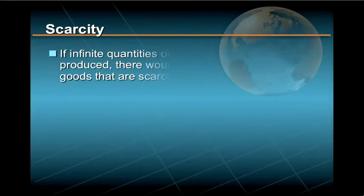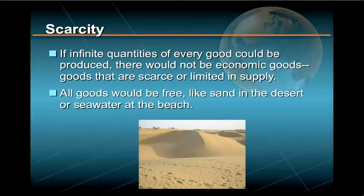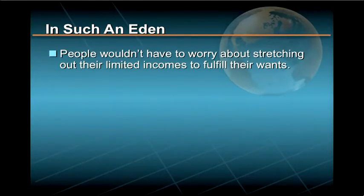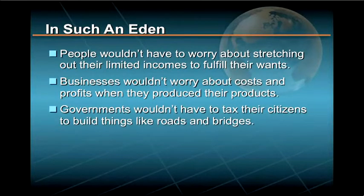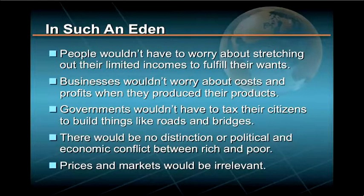Take scarcity first. If infinite quantities of every good could be produced, there would not be economic goods – that is, goods that are scarce or limited in supply. All goods would be free, like sand in the desert or seawater at the beach. In such an Eden of affluence, people wouldn't have to worry about stretching out their limited incomes to fulfill their wants. Businesses wouldn't worry about costs and profits. Governments wouldn't have to tax their citizens to build roads and bridges. And there would be no distinction or political and economic conflict between rich and poor, because everyone would have everything they needed and wanted. Prices and markets would be irrelevant, and economics would not be a useful subject.